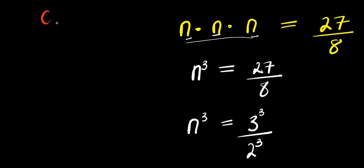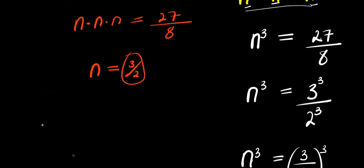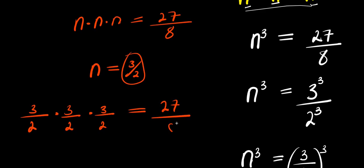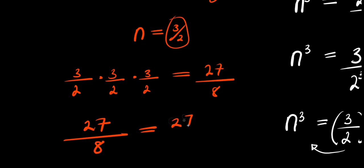We can verify by checking: n times n times n equals 27/8, with n equals 3/2. Substituting gives 3/2 times 3/2 times 3/2. Multiplying numerators: 3 times 3 times 3 equals 27. Multiplying denominators: 2 times 2 times 2 equals 8. So we get 27/8 equals 27/8, and left-hand side equals right-hand side. Verified.